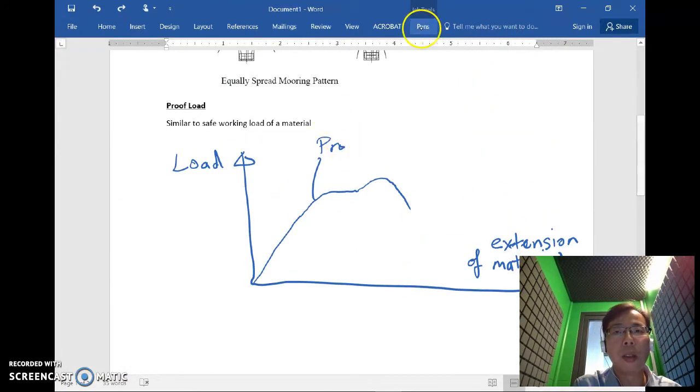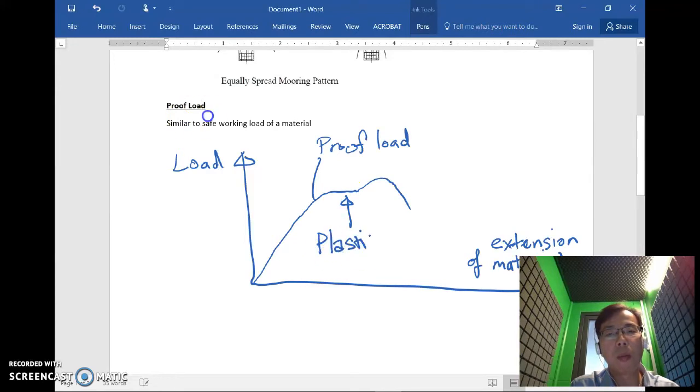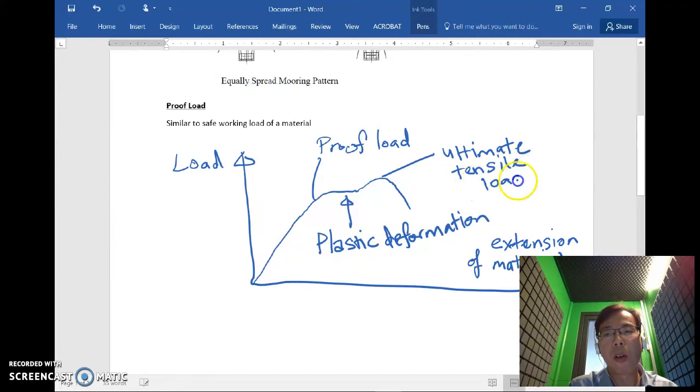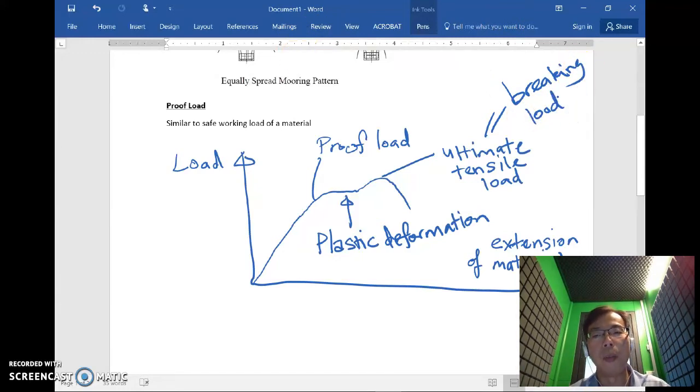So this portion is the proof load of the material and then after which beyond this load it will go into plastic deformation and finally before breaking off it will have this ultimate tensile load which is actually equals to the breaking load of the material and beyond this point the material will break. So this is the proof load concept.